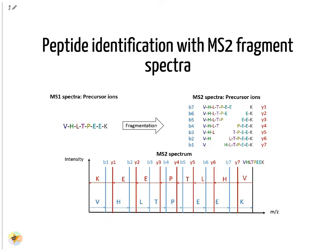Many tryptic peptides of an organism have the same or similar masses. Therefore, MS1 spectra don't allow reliable peptide sequence identifications. MS2 spectra allow peptide identification via the generated peptide fragments. The N-terminal fragments are called B-ions and the C-terminal fragments Y-ions. The differences between the fragment masses correspond to the mass of an amino acid. This allows manual interpretation of the spectra. However, this is a tricky procedure because in reality the MS2 spectra contain more noise and side product peaks. Also, in explorative proteomics tens of thousands of spectra are acquired, making manual interpretation unfeasible.